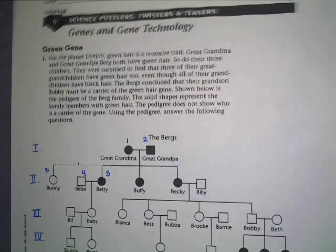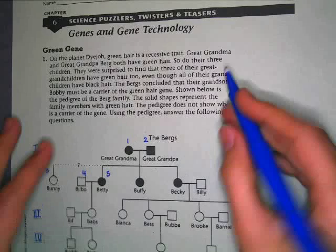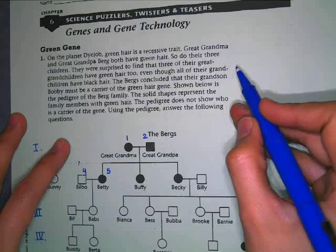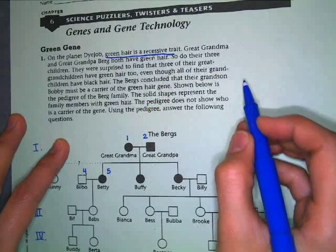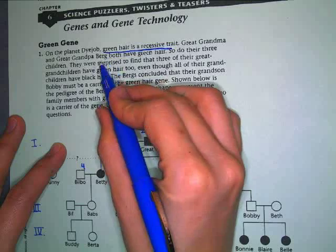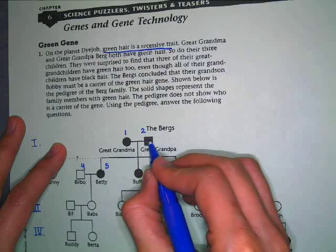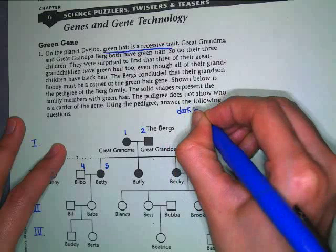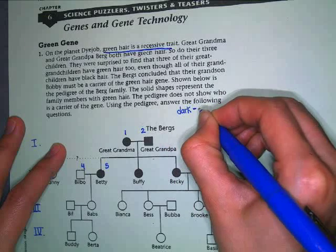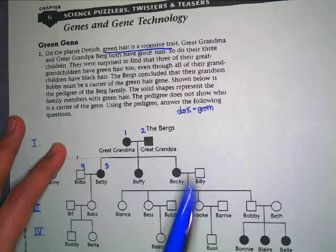I want you to read through the beginning of this and underline anything you think is important. You always want to read your question first so you know what they're asking for. Some important things I notice: they say green hair is a recessive trait. Great grandma and great grandpa Berg — these two people both have green hair. So if a shape is colored in dark, it's going to be green hair.